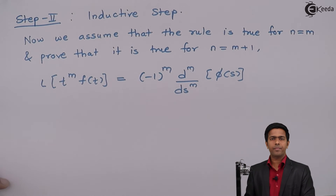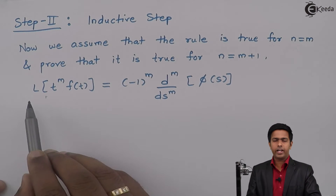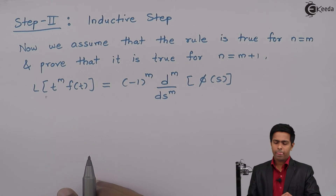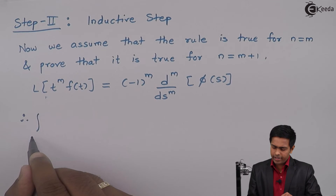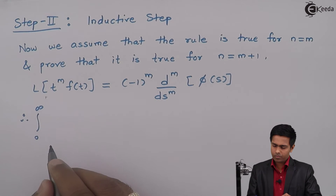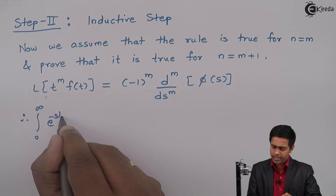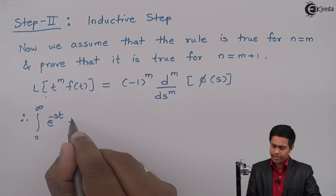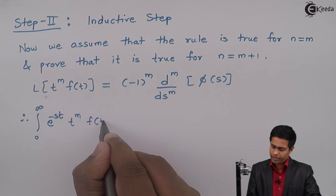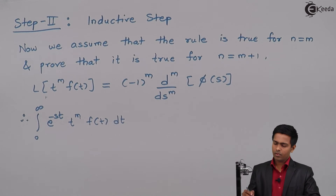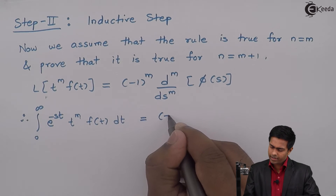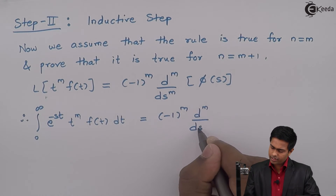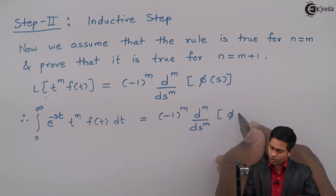On the left-hand side, applying the definition of Laplace transform, we get the integral from 0 to infinity of e^(−st) · t^m · f(t) dt, which equals (−1)^m · d^m/ds^m φ(s). We have assumed the rule is true for n equal to m and substituted accordingly.